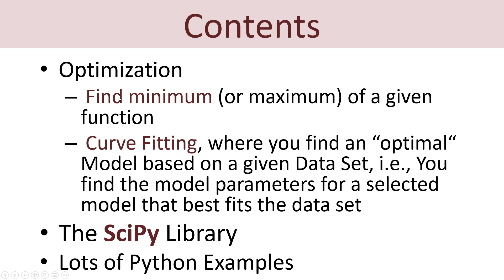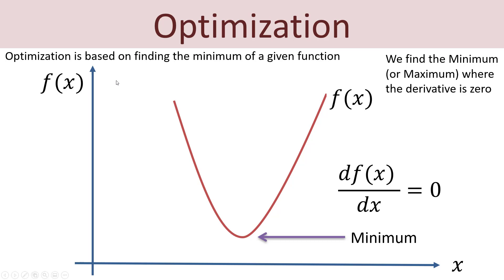Let's start with the basics regarding optimization. Optimization is based on finding the minimum of any given function. Mathematically, it is where the derivative of the function equals zero. So at the minimum point the derivative is zero.